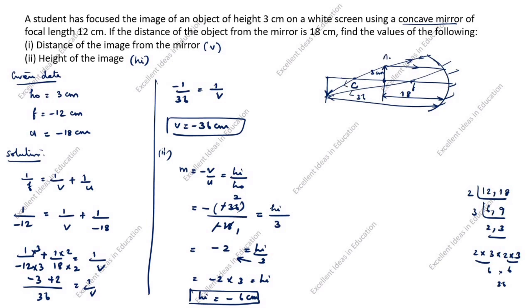We label the object as AB and the image as A-dash B-dash. This completes the ray diagram of the concave mirror. Thanks for watching this video.